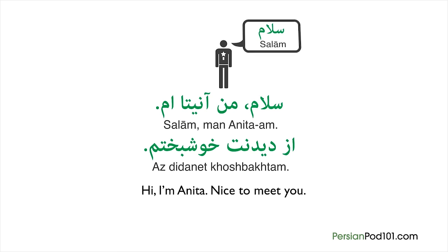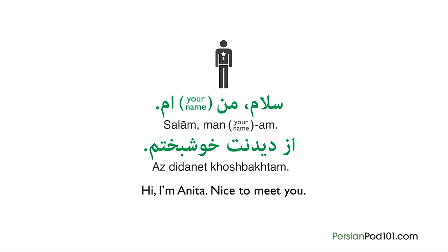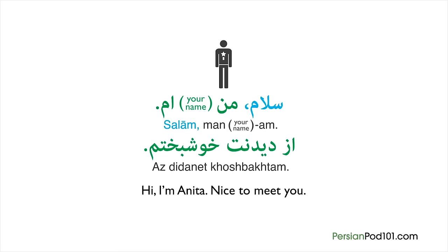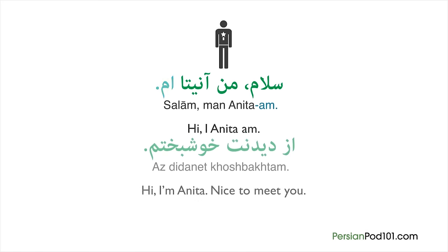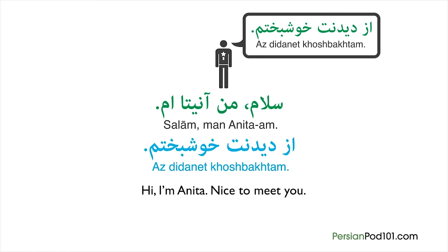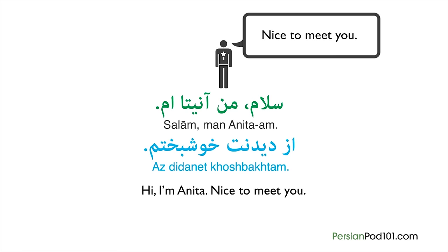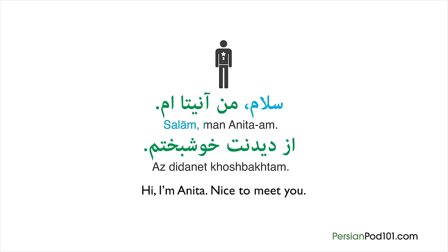Start by saying 'Salam,' which means hi. Then say 'man,' meaning I, followed by your name, and then 'am,' which means 'to be' or 'am.' Salam, man Anita am. Persian word order is different than English. Word for word, this literally means: hi, I, Anita, am. Finally, say 'Az didanet khoshbakhtam,' which means nice to meet you.